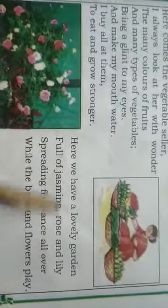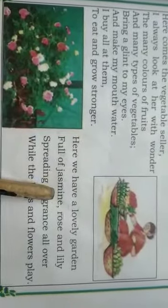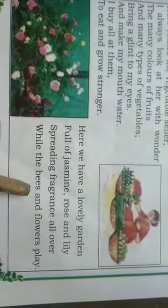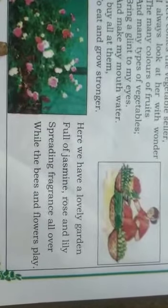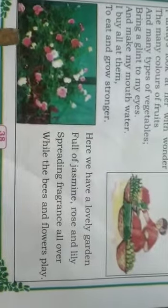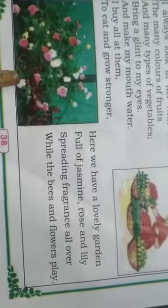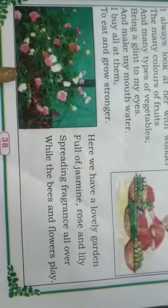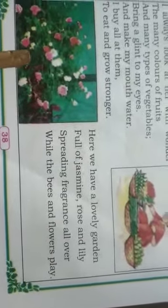Here we have a lovely garden full of jasmine, rose, and lily. Spreading fragrance all over — feel the bees and flowers play. The smell that comes from it, the beautiful sight — so much fragrance spreading out, sweet and wonderful smells. We see all colors and all types of flowers, playing together.